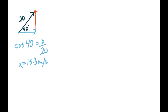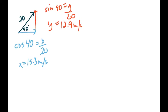Now do the same for the vertical side using sine: sine 40 = y/20, cross-multiply, and we get 12.9 meters per second. So we have our initial speed of 20, but really the 20 we're never going to use directly. The only thing we use the 20 for is to figure out those horizontal and vertical components. So now that we have that, those components — 15.3 and 12.9 — are the information we'll be working with.